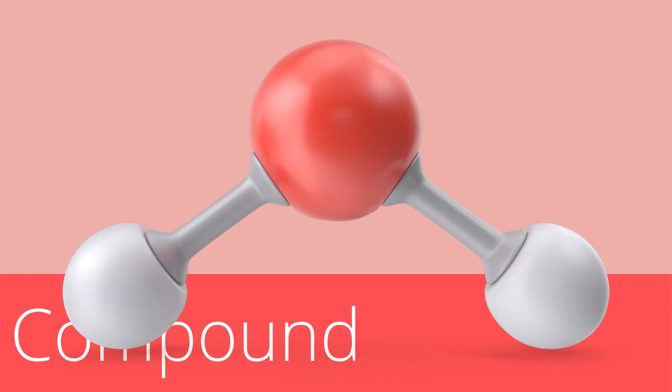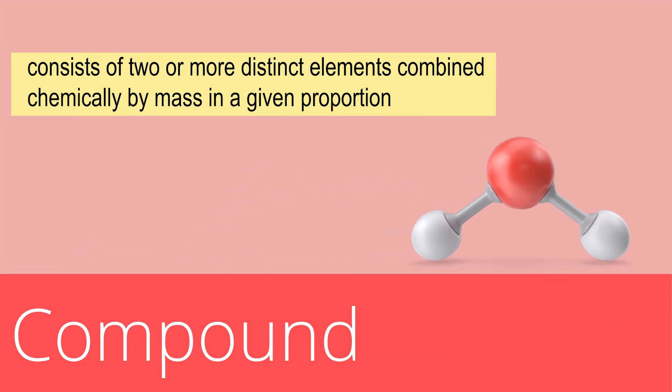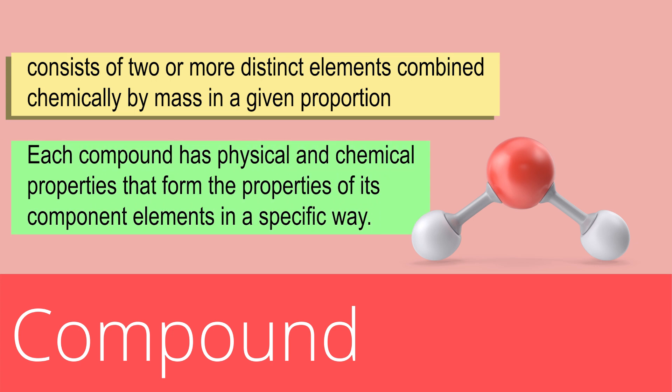A compound, on the other hand, is another class of pure substance. A compound consists of two or more distinct elements that are combined chemically by mass in a given proportion. Each compound has physical and chemical properties that form properties of its component elements in a specific way. Water, composed of hydrogen and oxygen, is an example.